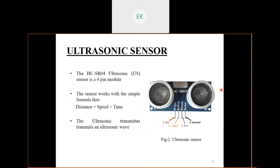The next component is the ultrasonic sensor. We have used the HC-SR04 ultrasonic sensor, which is a four-pin module. These sensors use ultrasonic waves to detect objects and measure the distance between the object and the sensor itself. We have used two ultrasonic sensors in our project: one for lid opening by measuring the distance between the object and the sensor, and another one inside the lid for measurement of the waste level.